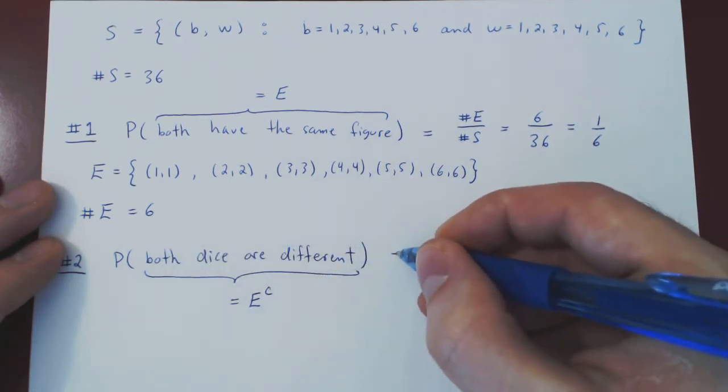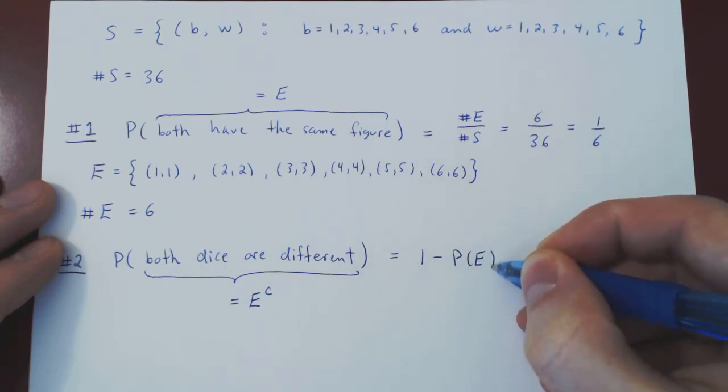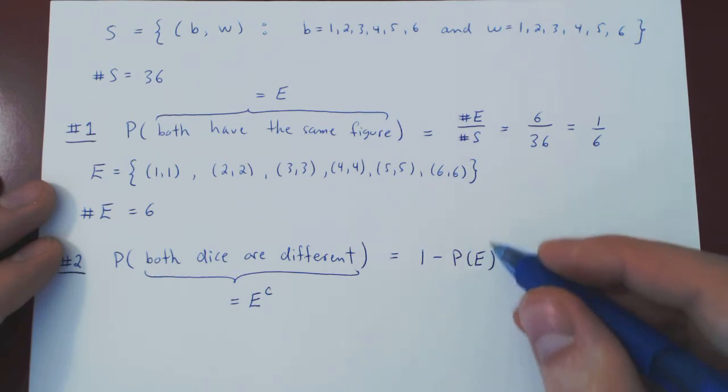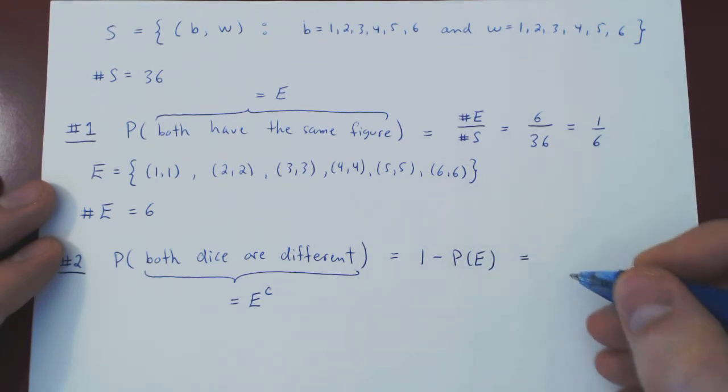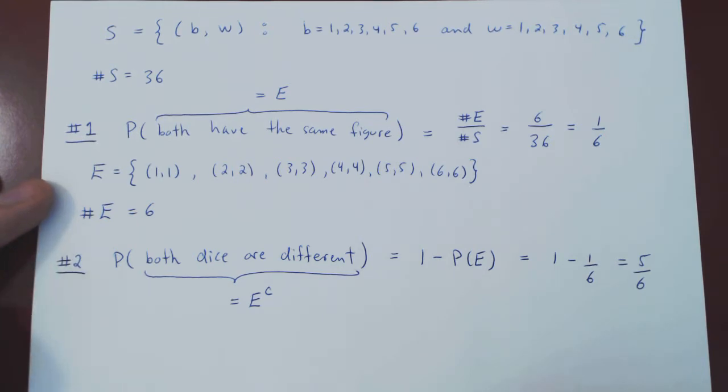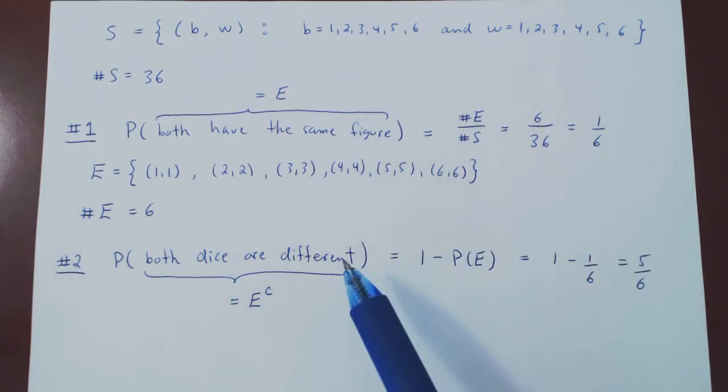And here we can use the simple complement rule. P of E complement is going to be 1 minus P of E. But we have just found P of E. It's 1 out of 6. So we have 1 minus 1 out of 6, which gives us of course 5 out of 6.